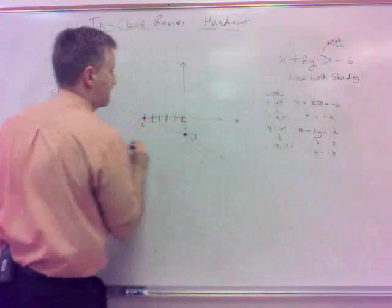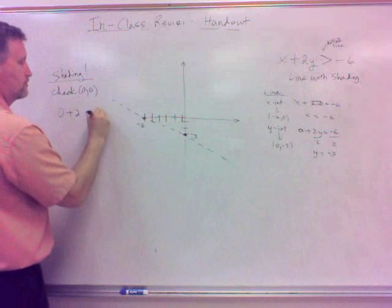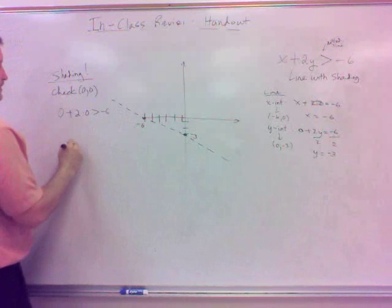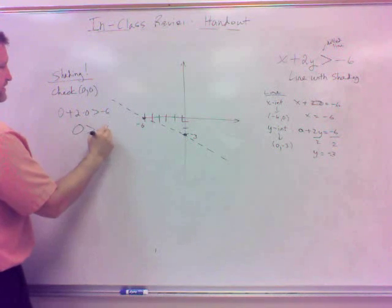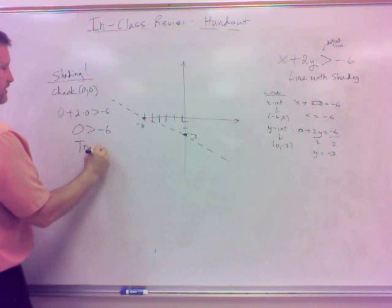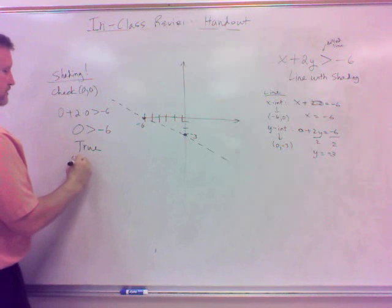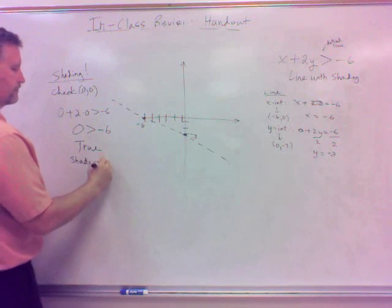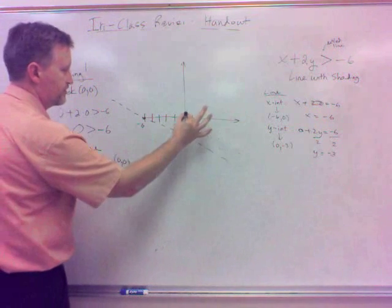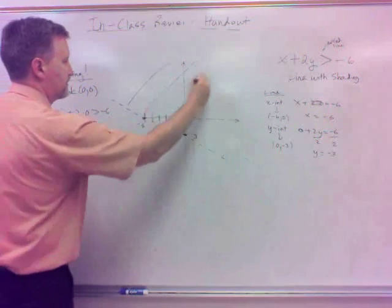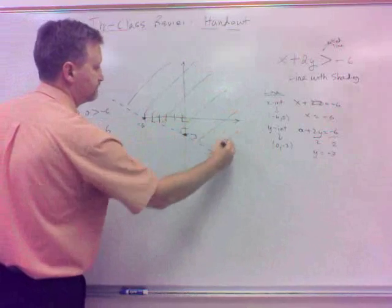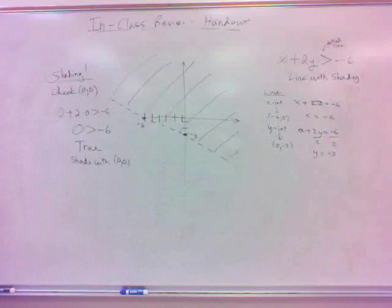And it's a dotted line. Let me just discuss that because it doesn't have the equal to part. And so, don't forget about the shading on it. How do I determine the shading? Check a point, not on the line. Check 0, 0 if it's not on the line. 0 for x, 0 for y. See if that's true or not. That's 0, that's 0. So 0 is greater than negative 6. That is true, isn't it? So 0, 0 works, so we shade the side with 0, 0. Here's 0, 0, so that's shading the side.